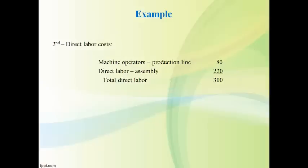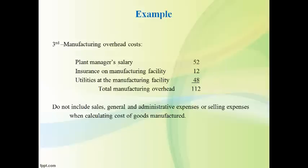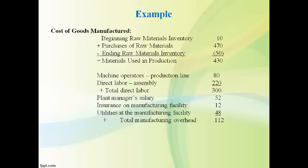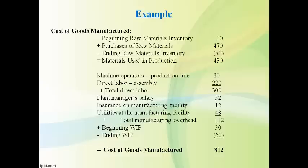The second step is to add direct labor costs. The third step is to identify all the manufacturing overhead costs. The last step is to add beginning work in process — since those products were finished first — and subtract ending work in process for the costs that are not yet finished.